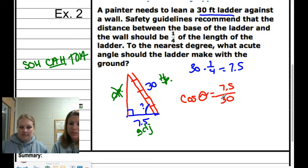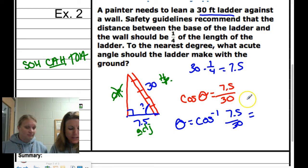Just type that all in your calculator - 7.5 divided by 30. Cosine inverse of 7.5 over 30 gives us theta equals 76 degrees.